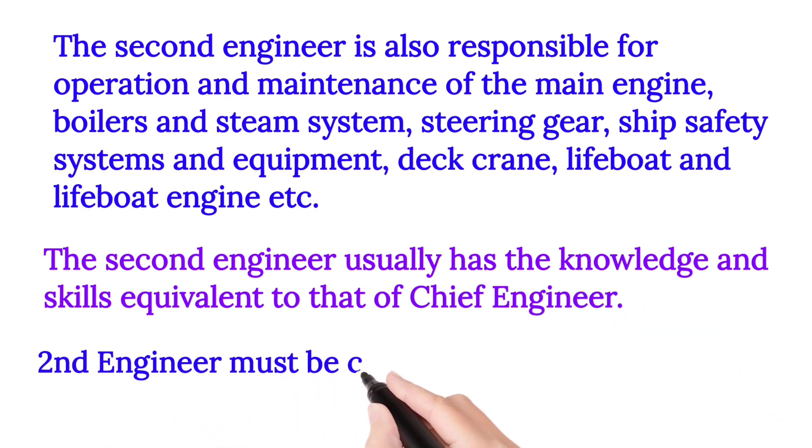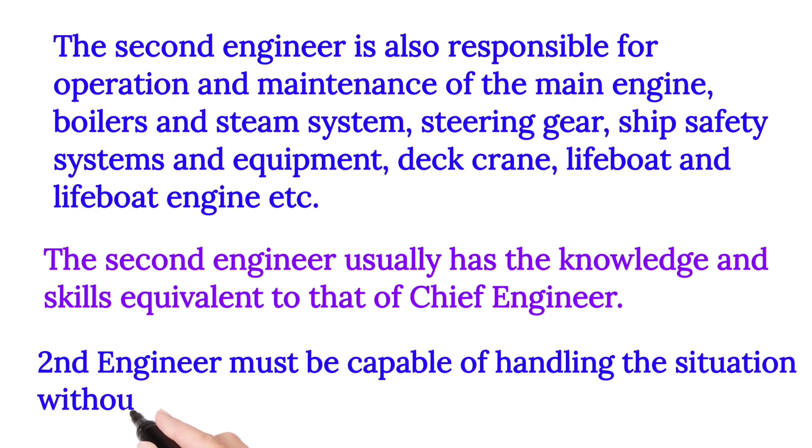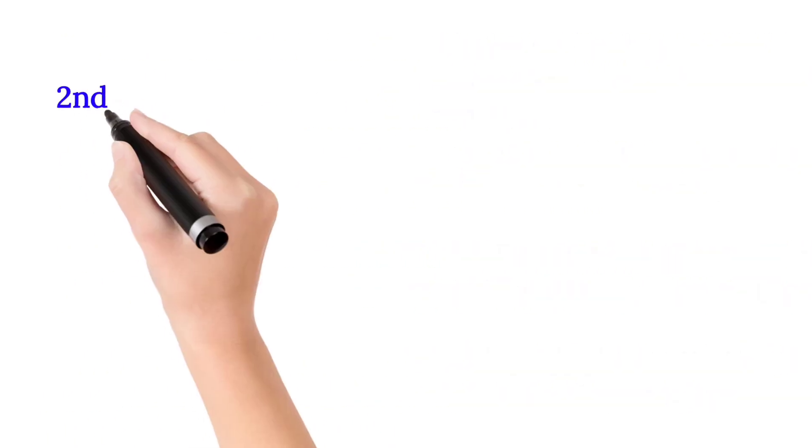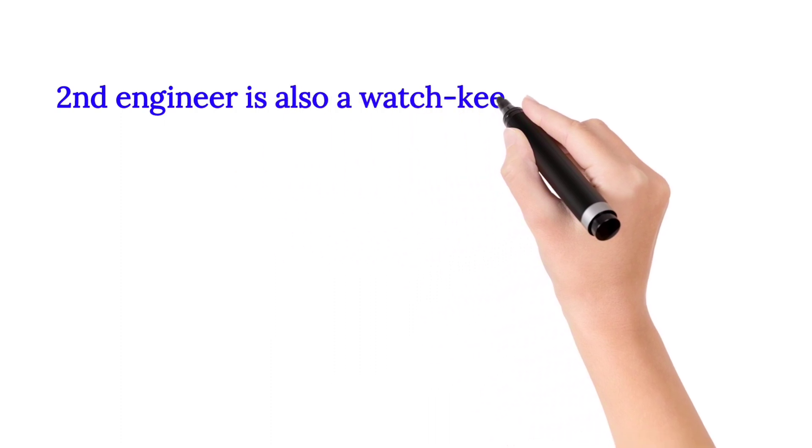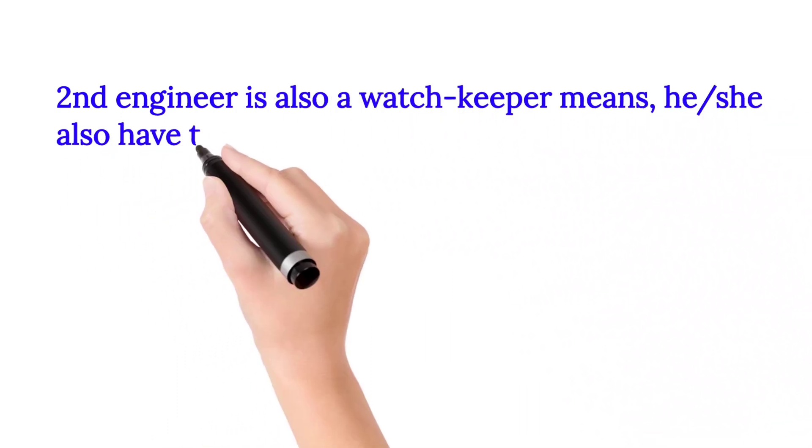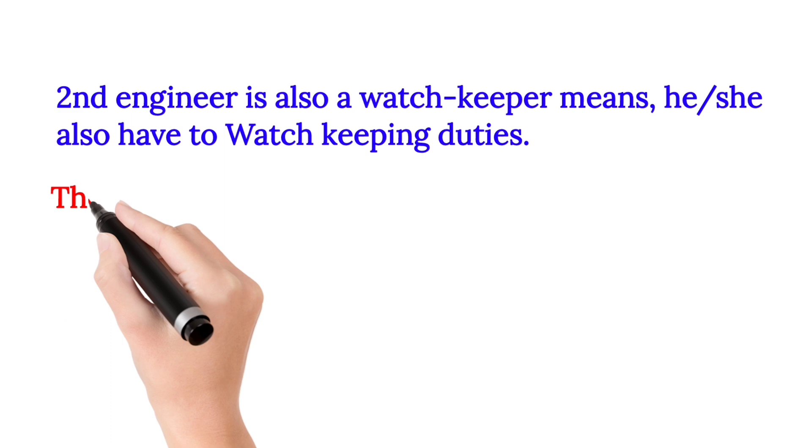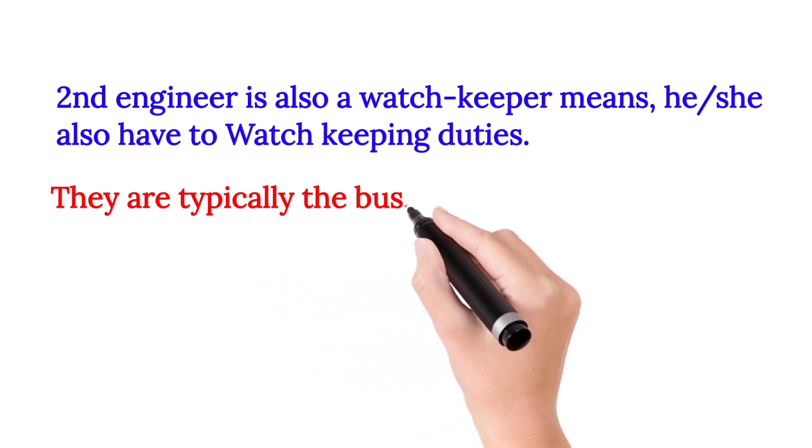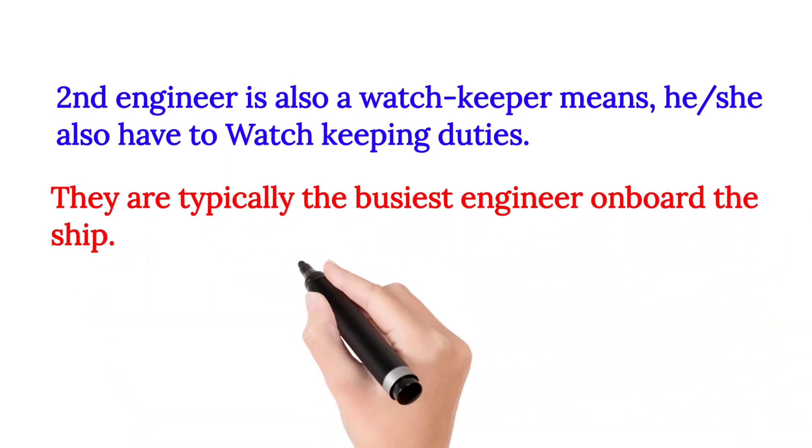The Second Engineer must be capable of handling the situation without the Chief Engineer. The Second Engineer is also a watch keeper, meaning he or she also has watch keeping duties. They are typically the busiest engineer on board the ship.